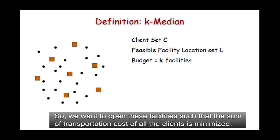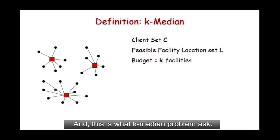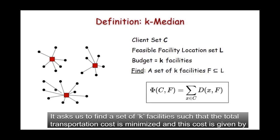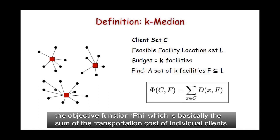So we want to open these facilities such that the sum of transportation cost of all the clients is minimized. And this is what k-median problem asks. It asks us to find a set of k facilities such that the total transportation cost is minimized. And this cost is given by the objective function φ, which is basically the sum of the transportation cost of individual clients.